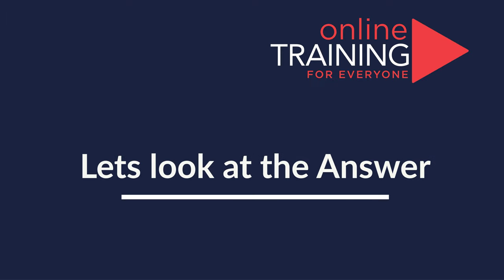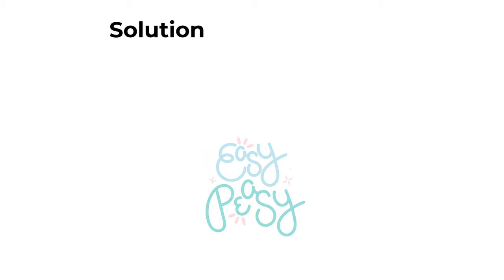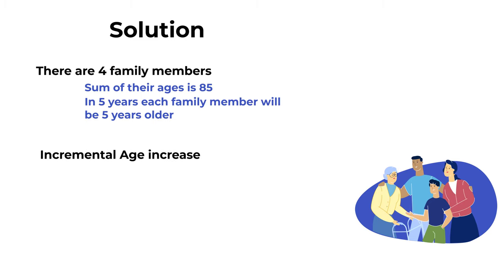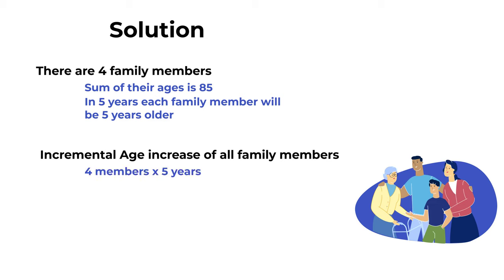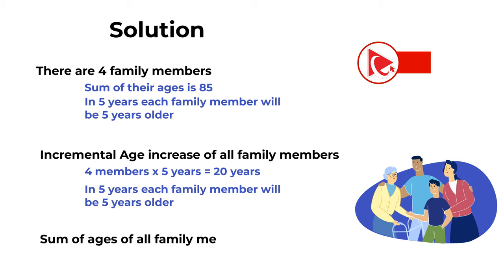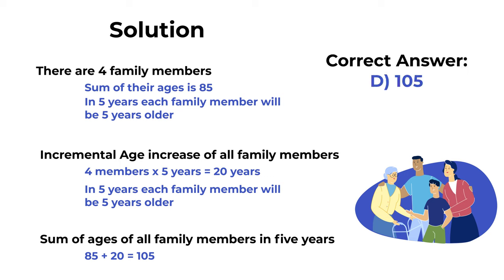The key here is not to overthink the problem. There are four family members and the sum of their ages is 85. In five years, each family member will be five years older, so the incremental age increase for all members is 4 × 5 = 20 years. The sum in five years is 85 + 20 = 105. The correct choice is D, 105.